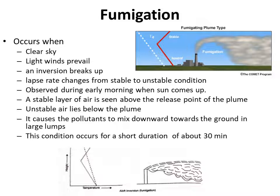This condition occurs for a short duration of time, maybe 30 minutes. As seen in the figure, there is a stable layer at a higher altitude, so above the plume line there is not much spread of the pollutant. But there is an unstable layer below the plume line, as a result of which the pollutant gets thoroughly dispersed towards the ground level, causing pollution at the ground for a short duration of maybe 30 minutes.